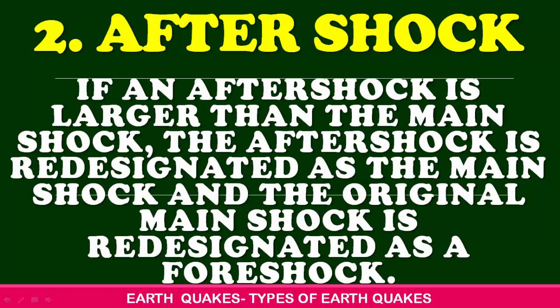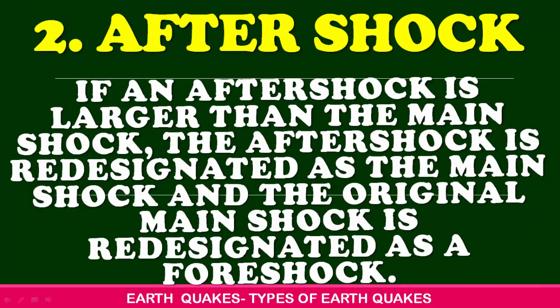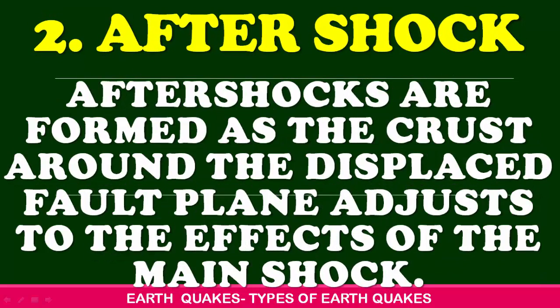If an aftershock is larger than the main shock, the aftershock is re-designated as the main shock and the original main shock is re-designated as a foreshock. Aftershocks are formed as the crust around the displaced fault plane adjusts to the effects of the main shock.